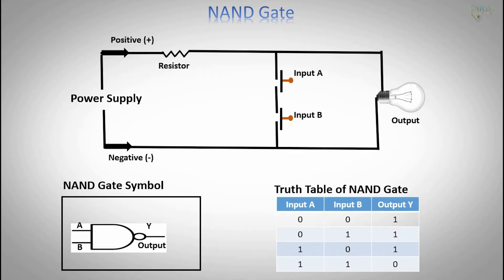Truth table of NAND gate. IC number is 74LS21, 14 pin.